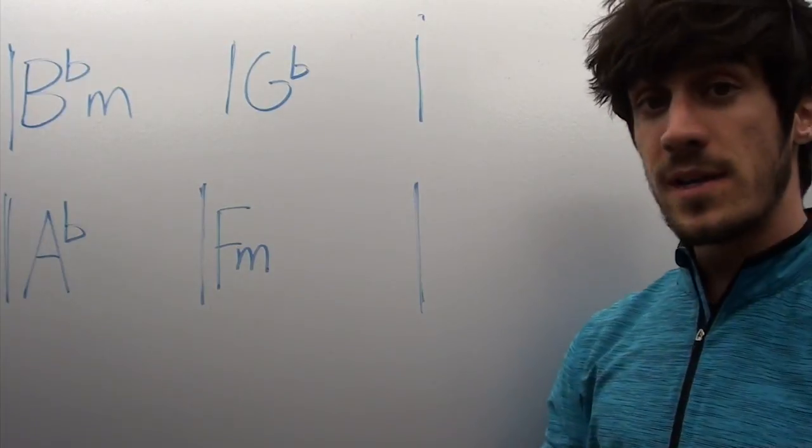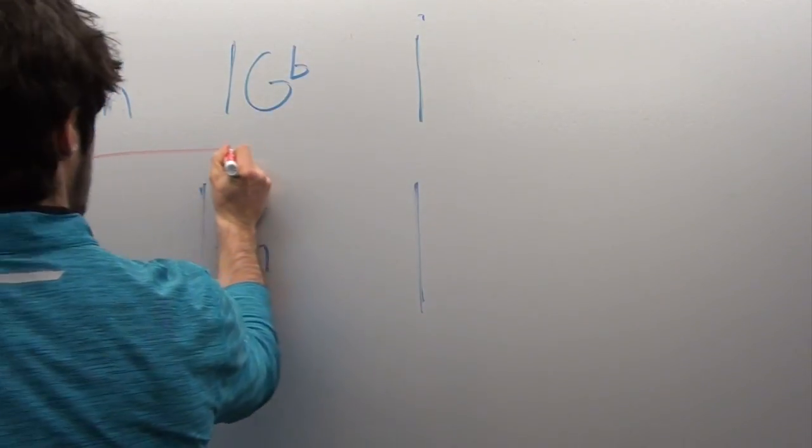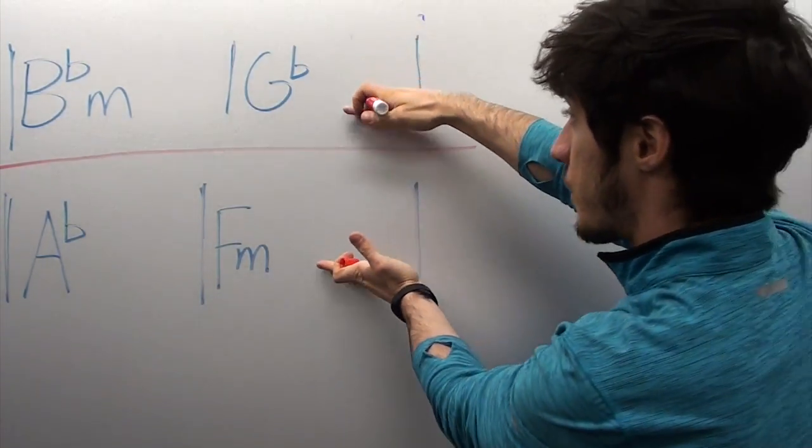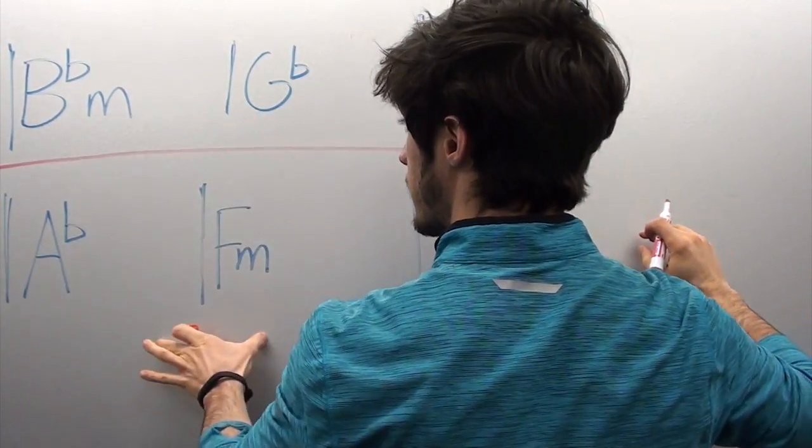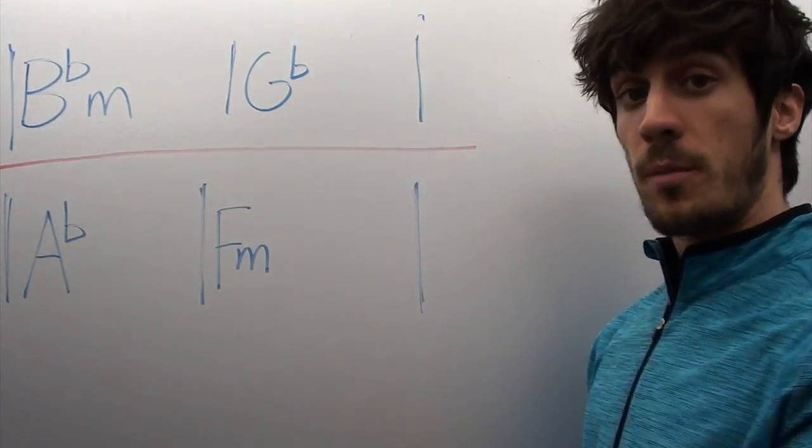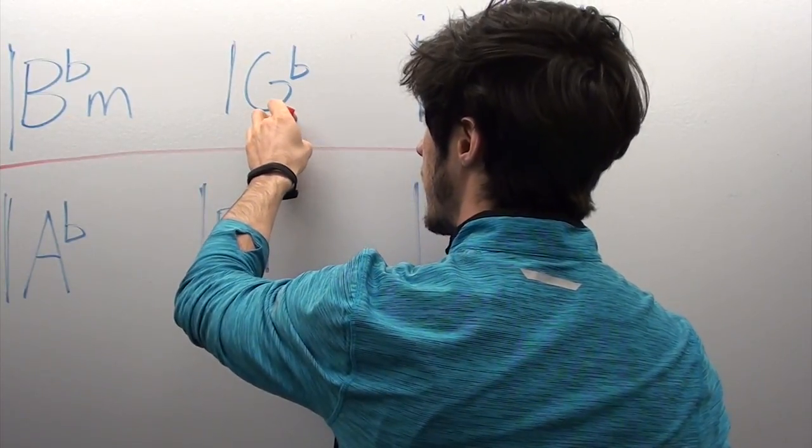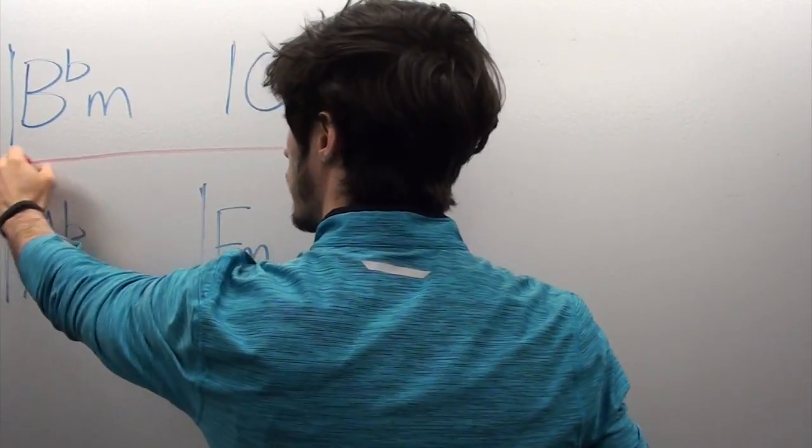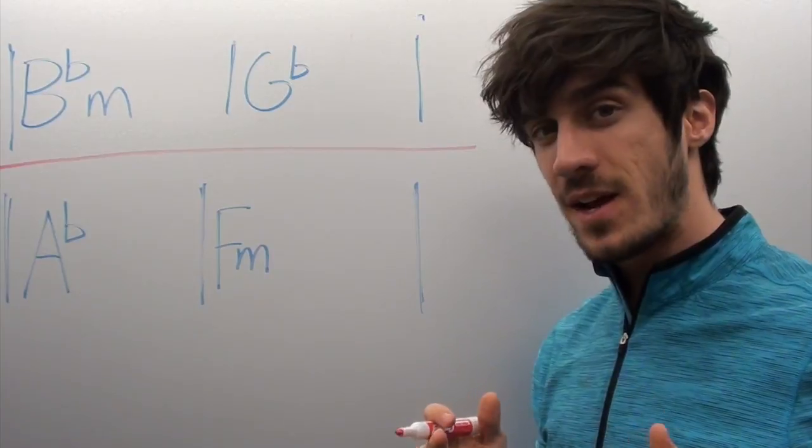This chord progression works really well because it's asymmetrical. Something is asymmetrical when it's not the same if you split it down the middle on both sides. So this line that I've drawn splits this progression down the middle, and as you can see, we've got different chords on both sides. B flat minor and G flat up here. A flat and F down here. If this chord progression were symmetrical, this would need to be an A flat, and this would need to be an F minor. It's like a mirror, right? If you split it down the middle and it mirrors the same on both sides, then it's a symmetrical chord progression and that's not good.